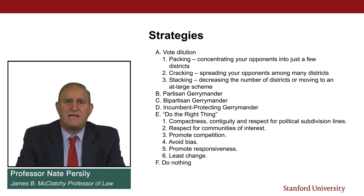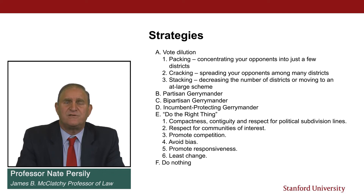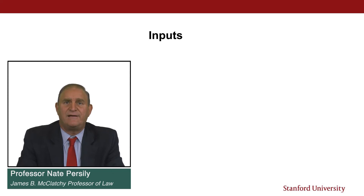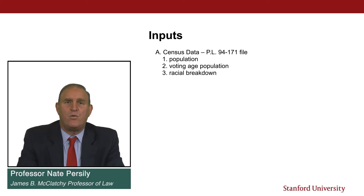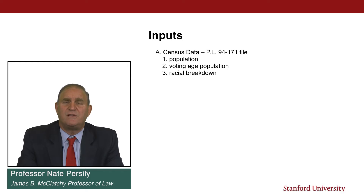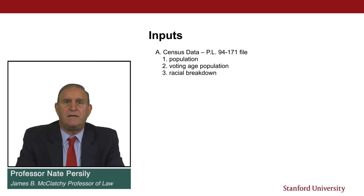By way of introduction to the redistricting process, it's useful to talk about what line drawers have at their disposal. The critical input to drawing lines is the census data — something called the PL 94-171 data file. PL refers to public law. This is the required data that the census must collect to facilitate the redistricting process for all levels of government. Because of the one person, one vote rule, we engage in redistricting every 10 years once we have the census — that's true for the smallest school board as it is for congressional districts.